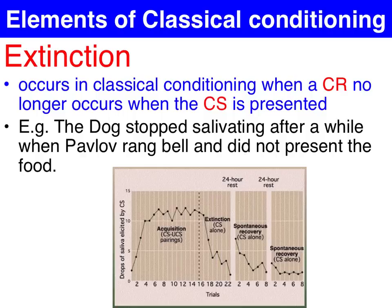In the case of the Pavlov experiment, after the dog had been conditioned to salivate to the sound of the bell on its own, Pavlov wanted to test how long it would take for the dog to unlearn this behavior. He rang the bell and didn't present the food, to see how many attempts it would take before the dog no longer reflexively salivated in anticipation of the food. It took about six goes before the dog no longer salivated to the sound of the bell on its own.